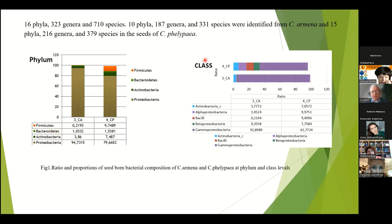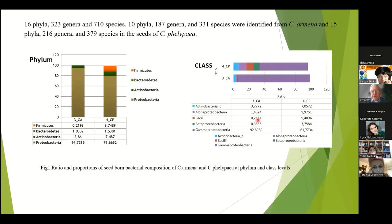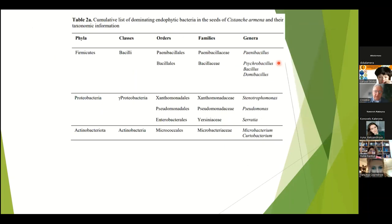At the class level, when you look at the family of bacteria, again Cistanche philippea from Portugal is more rich and more diverse, contrary to Cistanche armena from this semi-desert salty environment. The composition, of course, is also different, as you see on this sketch.